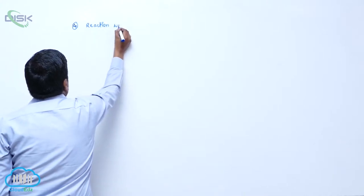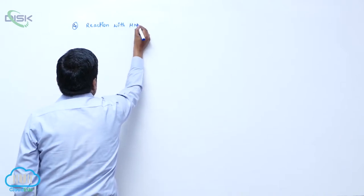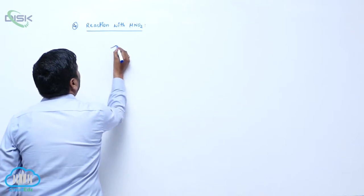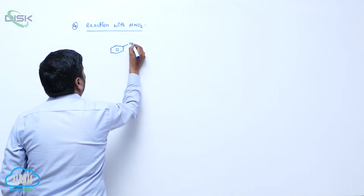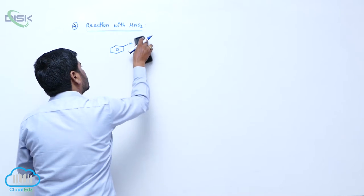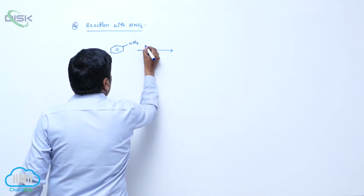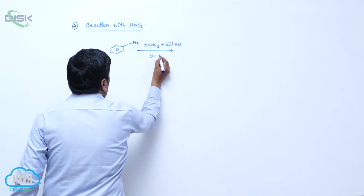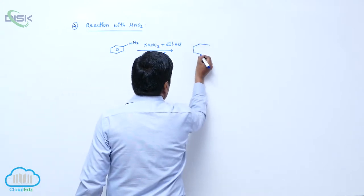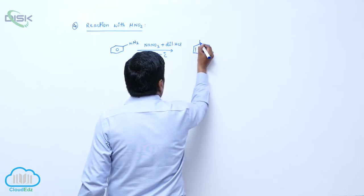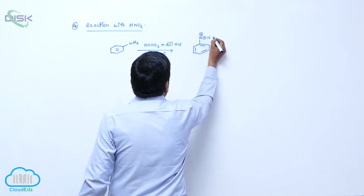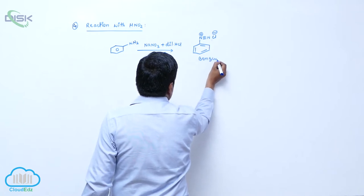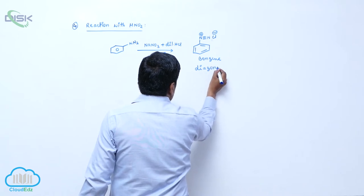Reaction with nitrous acid: when aniline reacts with sodium nitrite and dilute hydrochloric acid at 0 to 5 degrees centigrade, it forms a stable compound known as benzene diazonium chloride.